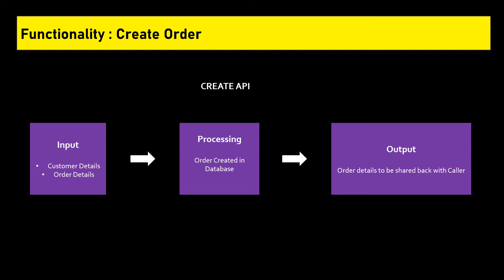If there is a validation failure or any processing error, then an error message is sent back to the calling application indicating the error. This is a simple non-technical view of a Create API. If any application passes the required inputs, this API will create an order and provide the order details back to the calling application. On the backend, it would use the POST HTTPS method. You can search further for the POST method for more technical details.